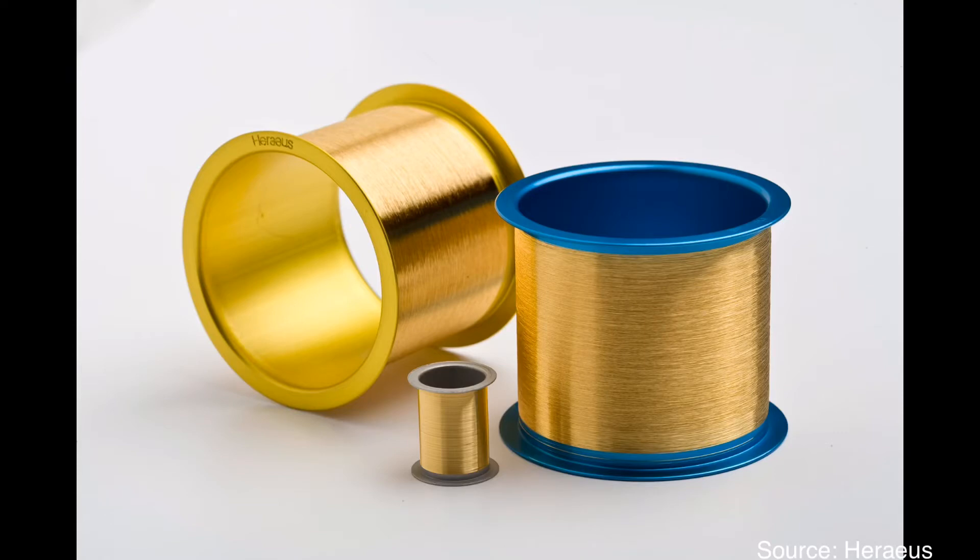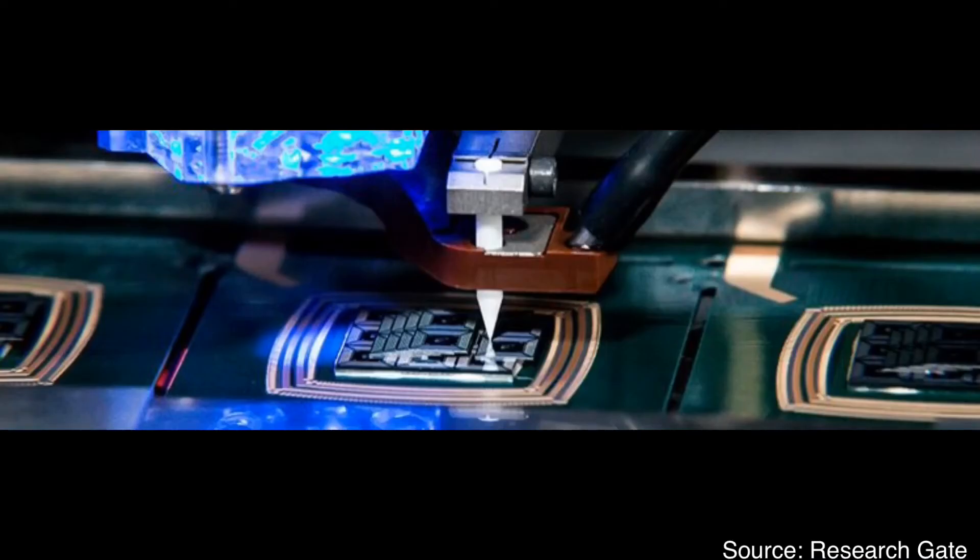Gold ball bonding is the most popular method in wire bonding, creating a ball shape at the end of the wire. There are three major steps in ball bonding.